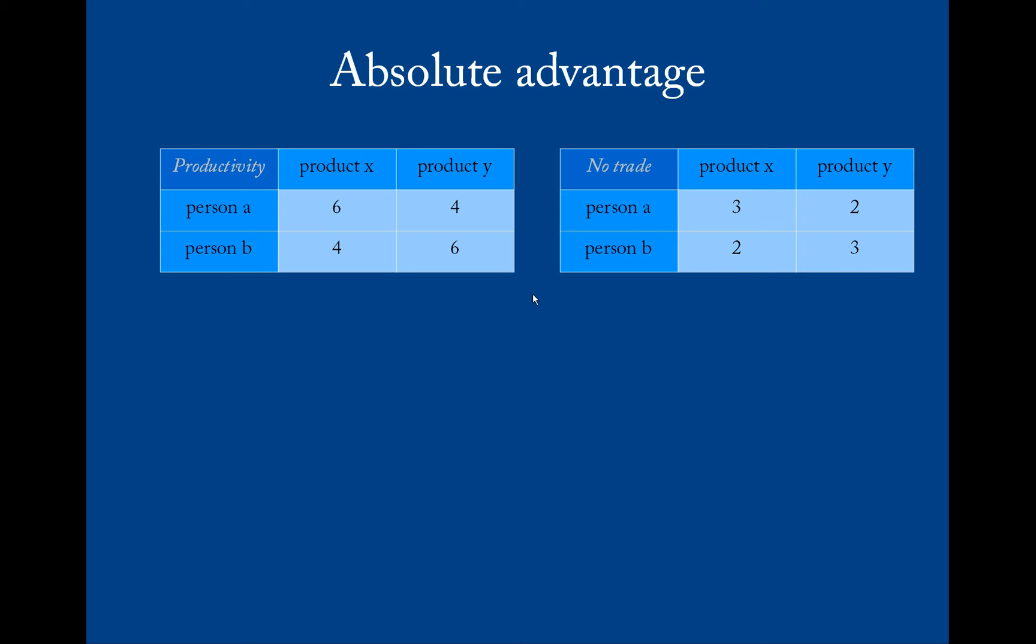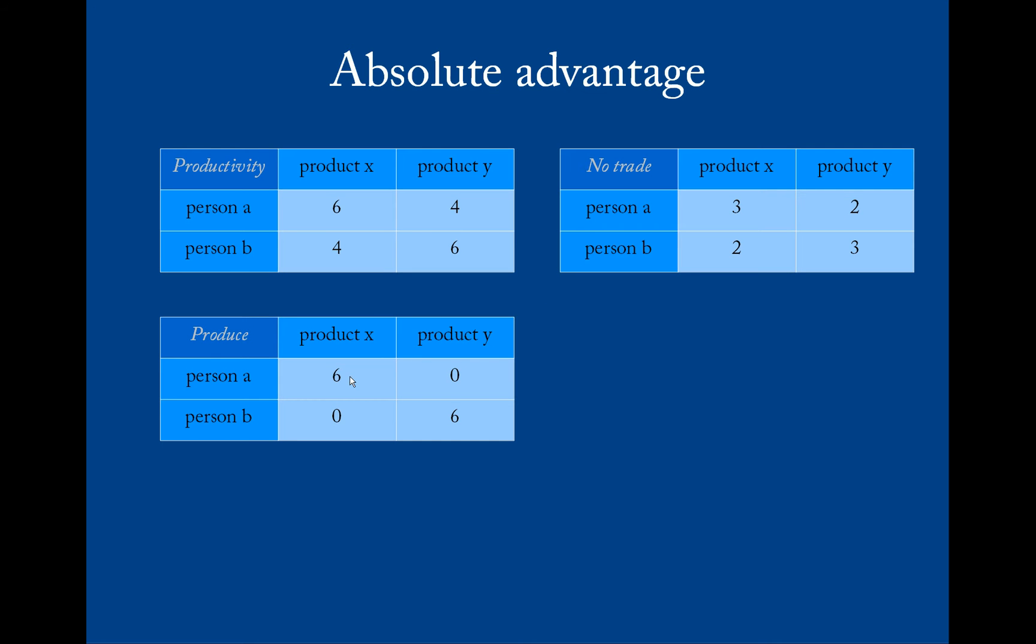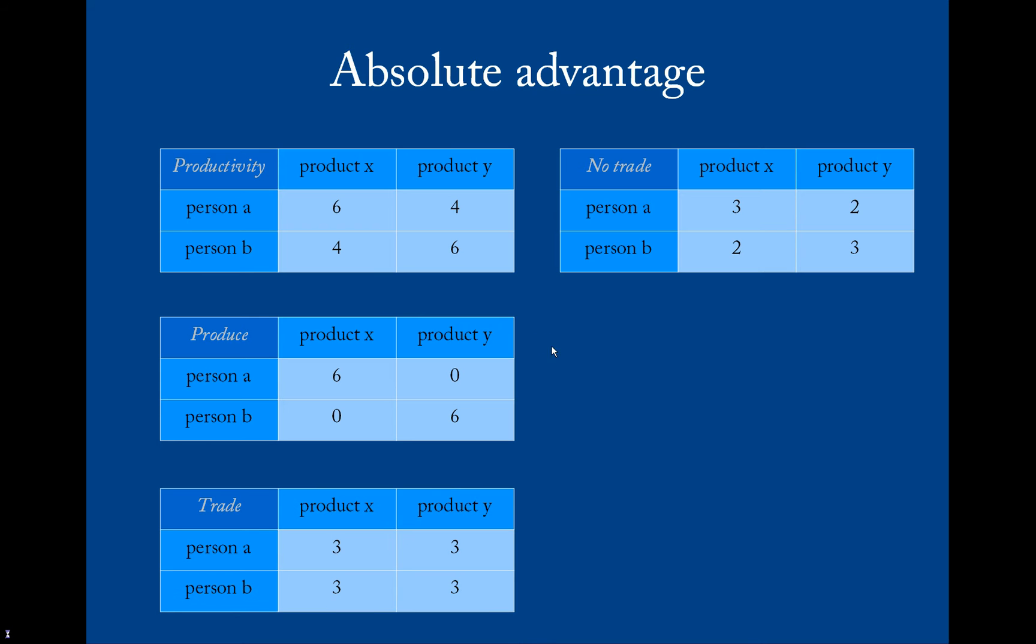But there seems a smarter way of going about things - that is for both to produce what they are best at and produce none of the other, and then to engage in trade and split their production in half. Trade at a ratio of one product for one product, and then they both end up with three products of both items.